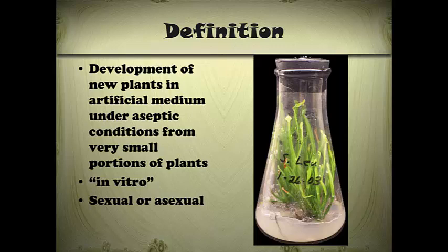Another term that also means the same thing: if you do much research into journal articles on this topic, you may see references to in vitro propagation. This is also just tissue culture or micropropagation. In vitro literally translated means 'in the glass,' so we're propagating plants in a glass jar, or sometimes a plastic one.